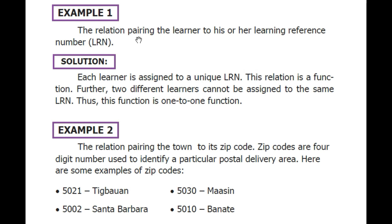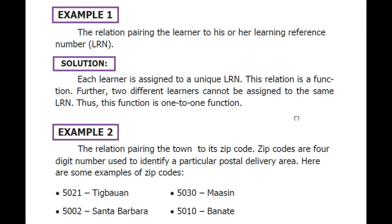Example 1: The relation pairing the learner to his or her learning reference number — the LRN. Each learner is assigned a unique LRN, so this relation is a function. Furthermore, two different learners cannot be assigned the same LRN. Hence, the function is a one-to-one function.